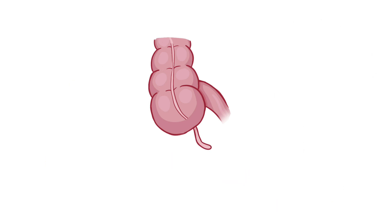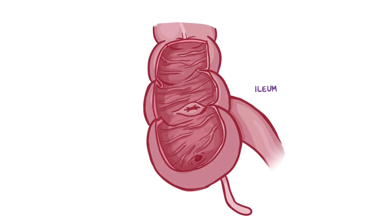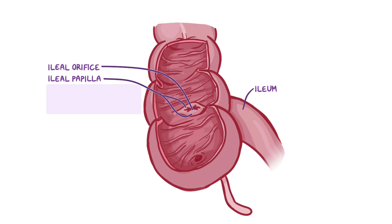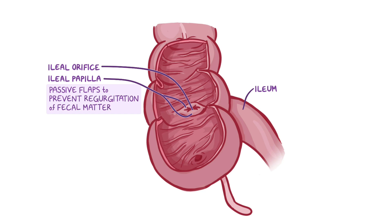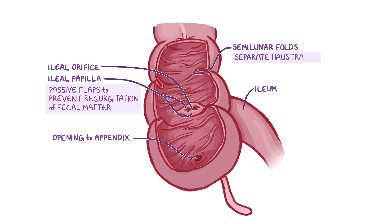If we open up the large intestine and look inside, we can see that the terminal ileum protrudes a bit into the cecum, forming the ileal papilla with the ileal orifice at its center. The orifice is usually closed due to tonic contraction, and the lips of the ileal papilla serve as passive flaps to prevent regurgitation of fecal matter from the cecum into the ileum. Just inferior to the ileal orifice, there's the opening to the appendix. Starting at the cecum and throughout the whole large intestine, there are multiple semilunar folds that are found in between and separate the haustra from one another.